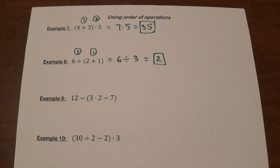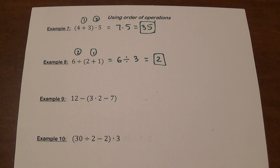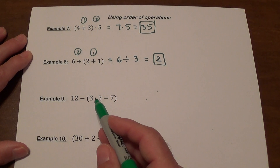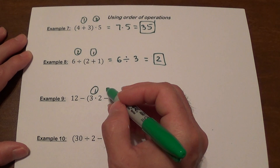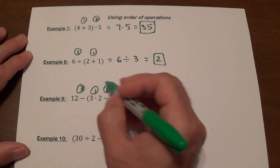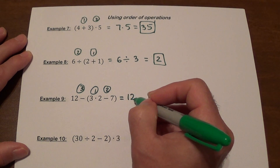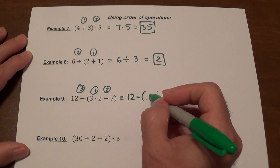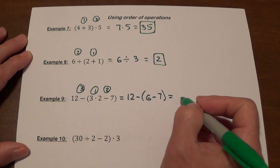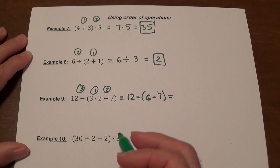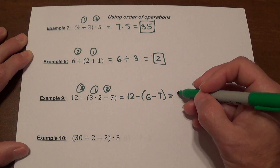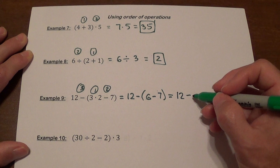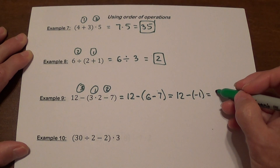When you have more than one operation inside parentheses, you follow the order of operations within them. Example 9: 12 minus (3 times 2 minus 7). Inside the parentheses, multiplication comes first: 3 times 2 is 6, then 6 minus 7 is negative 1. Finally, 12 minus negative 1 is 13.